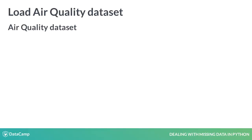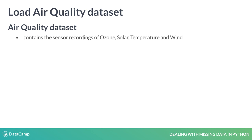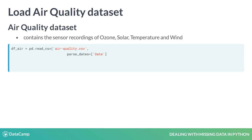We will use the air quality dataset, which contains the sensor recordings of ozone, solar, temperature, and wind. This is a time series dataset. Let's load the dataset using pd.read_csv with the arguments parse_dates equal to date and index_col also equal to date.